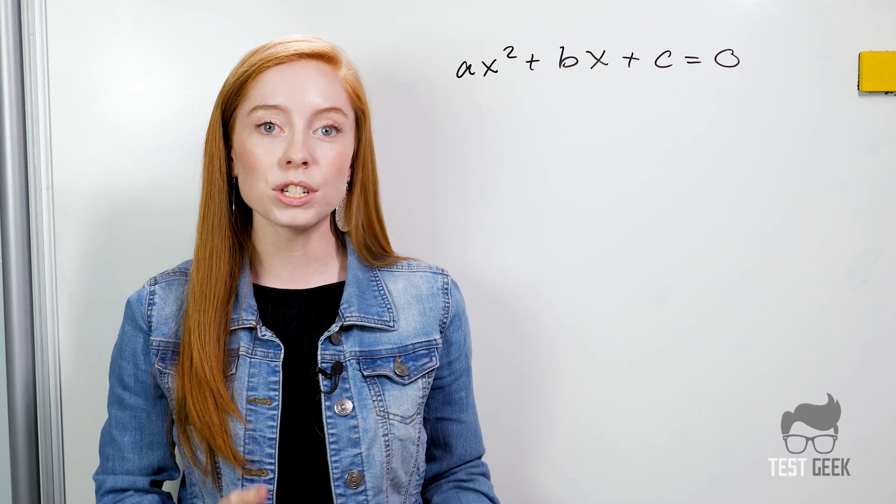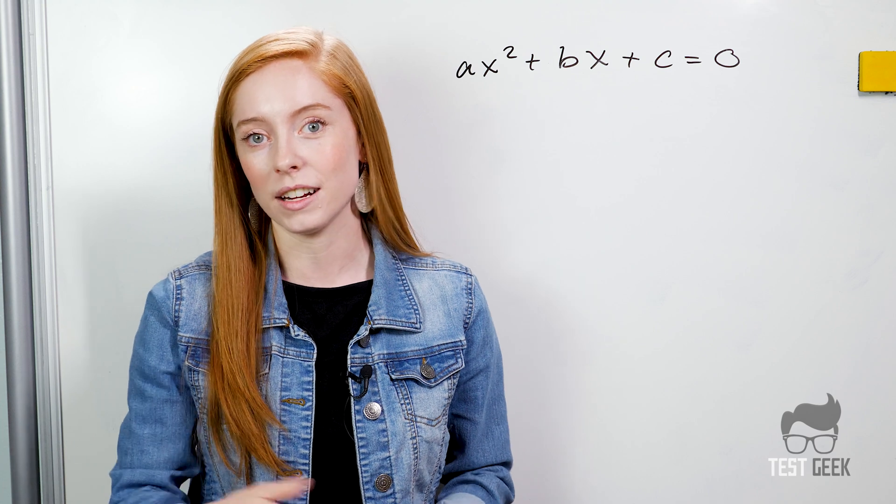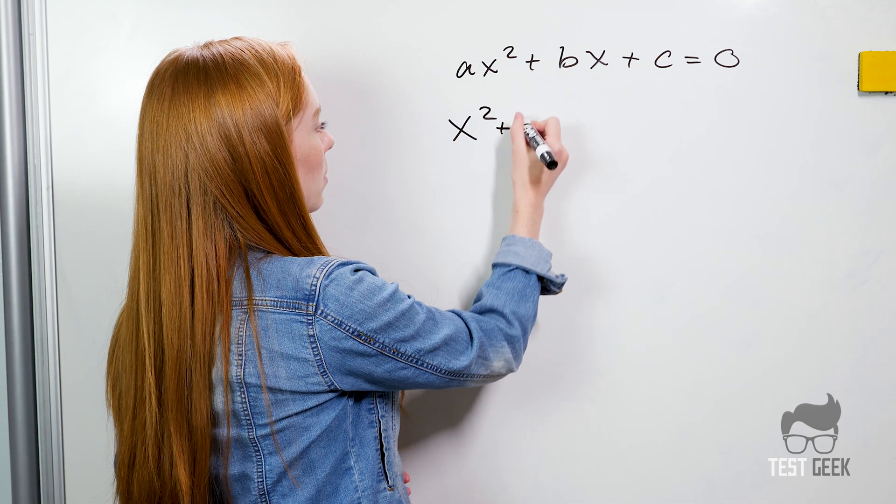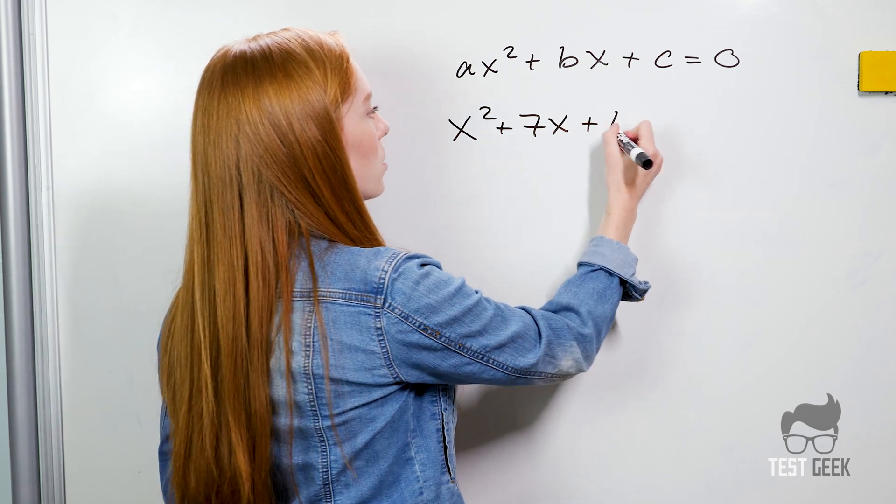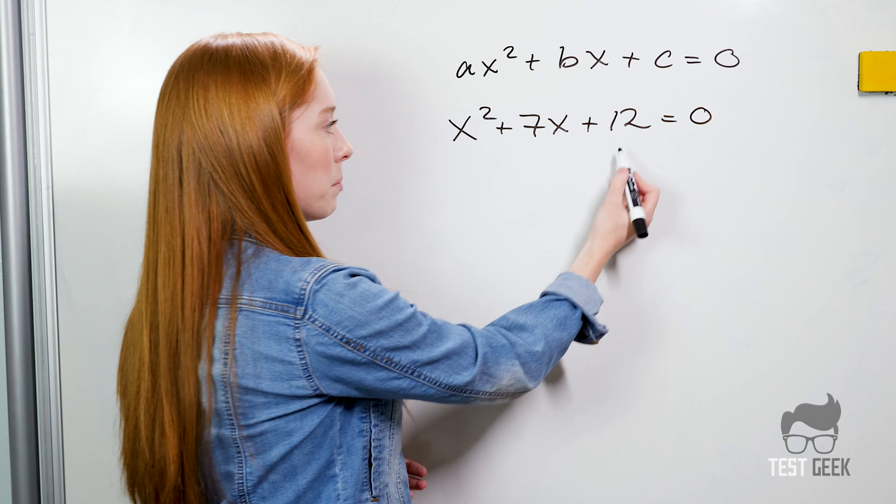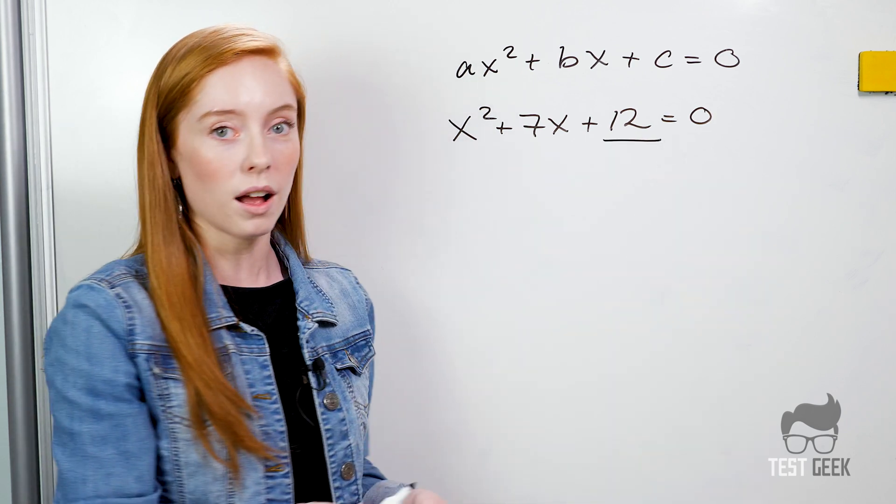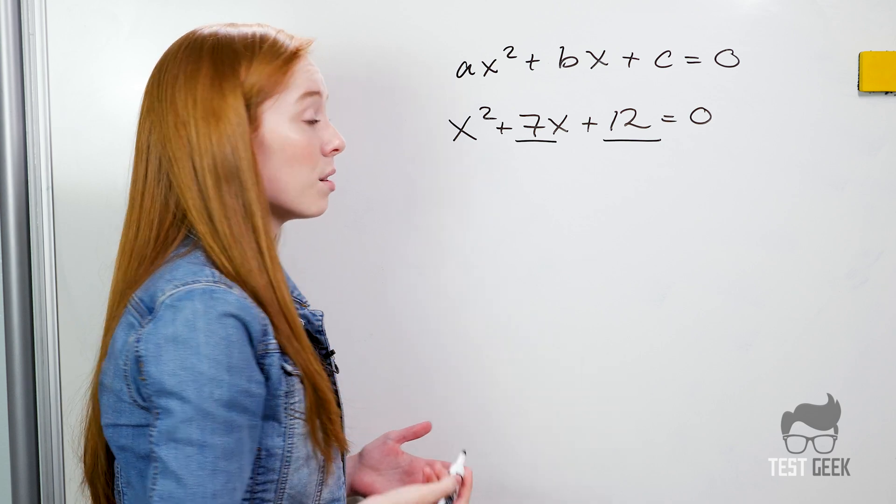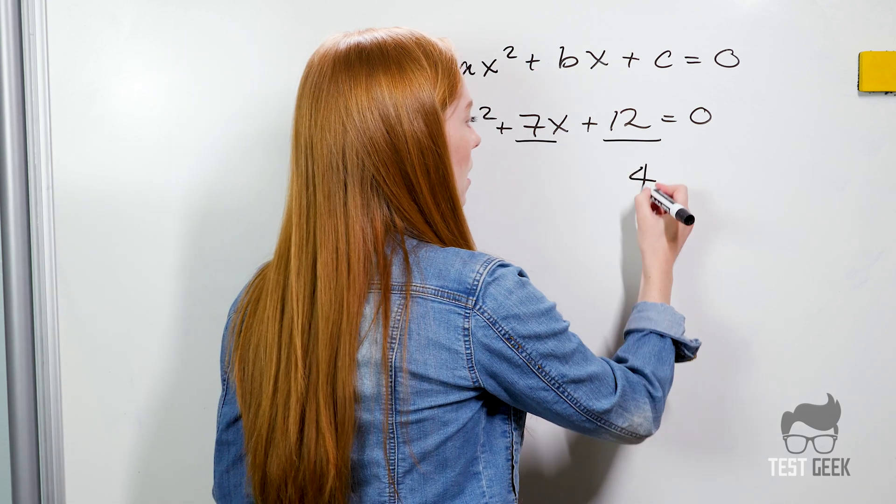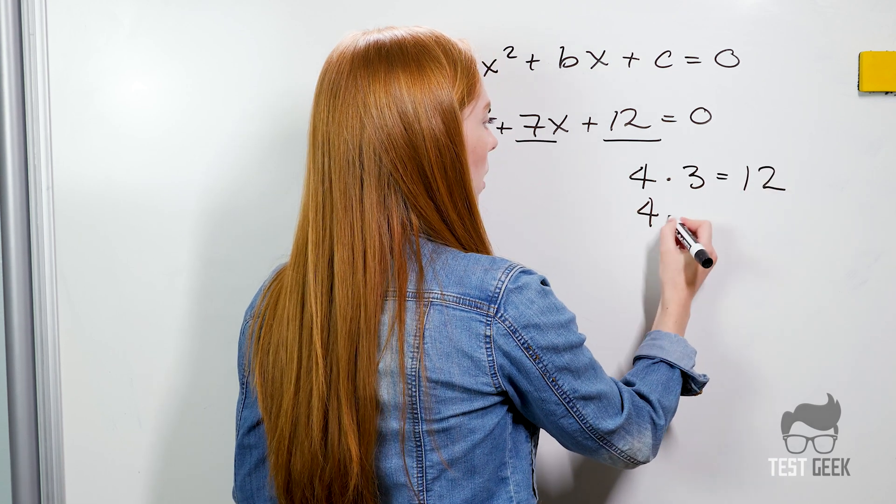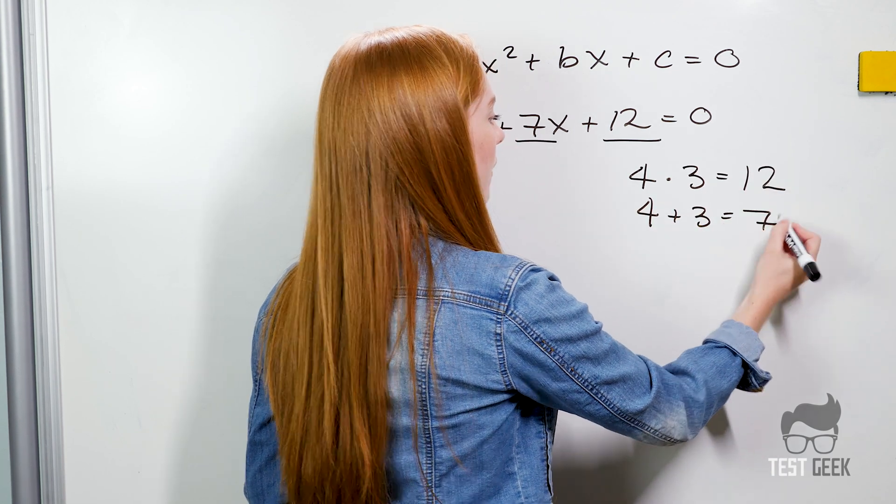For the most part when we see trinomials we're trying to factor to find our solutions. So if we had a trinomial like x squared plus 7x plus 12 equals zero, to factor this we are looking for two numbers that multiply to give us 12 and that add up to give us 7. What are those numbers? Well they're 4 and 3 because 4 times 3 equals 12 and 4 plus 3 equals 7.